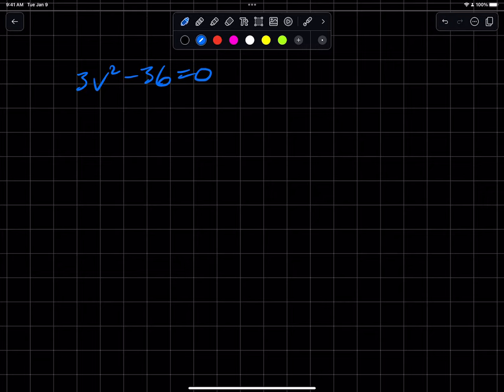I've never seen the proof of quote the square root property, but meanwhile, there's the square root property. All they mean is to do the following. Add 36 to both sides to get 3v squared equals 36. Divide both sides by 3.